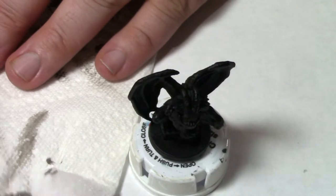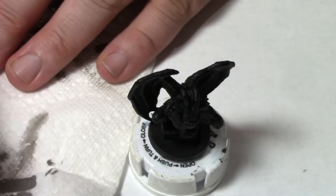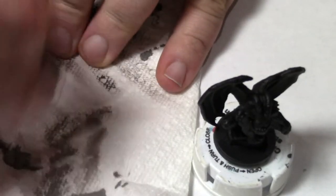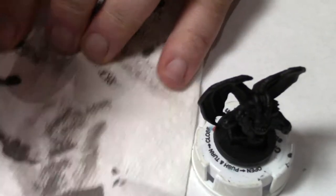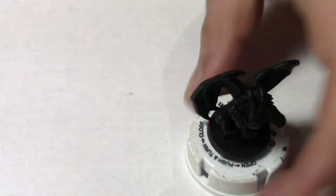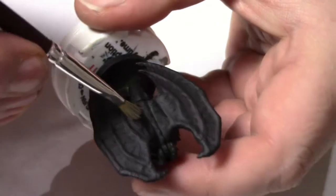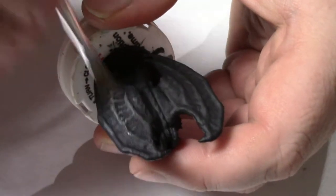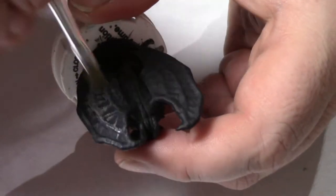With dry brushing, you just want to get some on your paint brush and just brush it out on your paper towel, or whatever you're using, and then you just want to lightly brush.